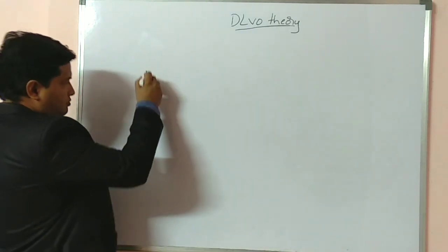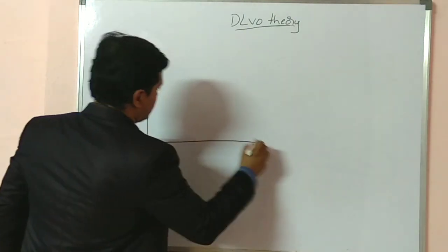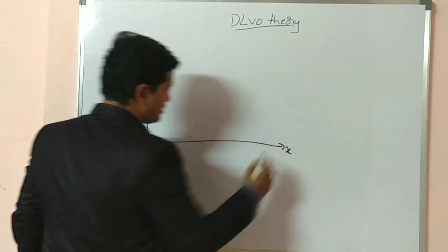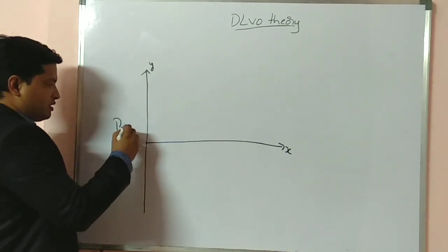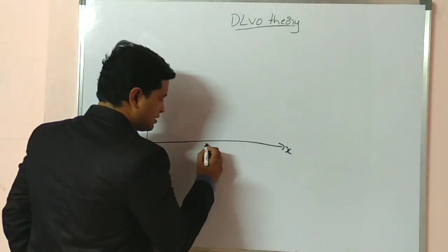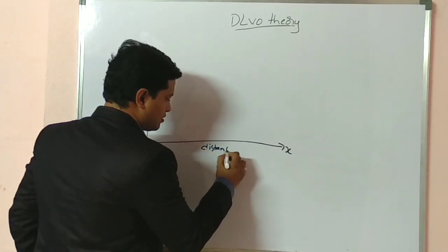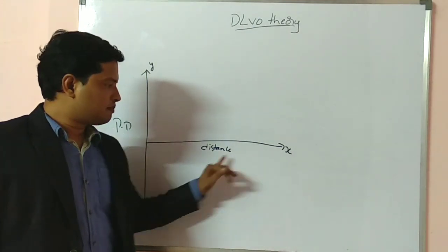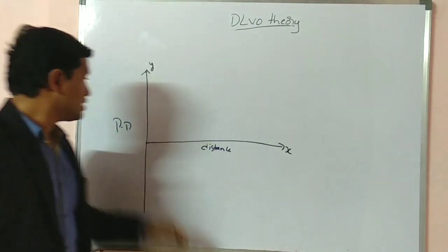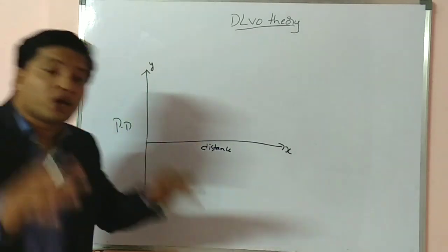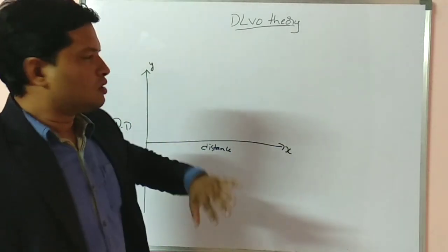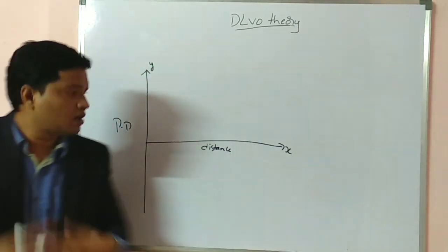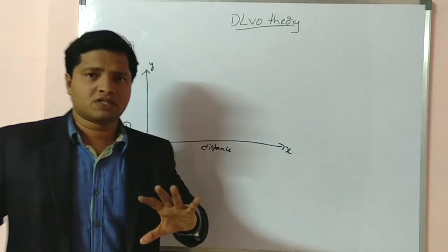Now, assume a graph where the x-axis represents distance between the particles and the y-axis represents potential difference between the particles. We will see what are the possible interactions between the particles.